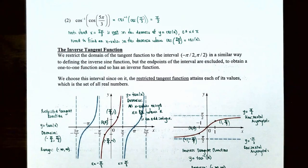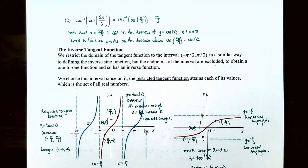This finishes our video on inverse sine and inverse cosine functions and their graphs. We talked about using the inverse sine and inverse cosine functions, finding exact values of expressions involving them, and their graphs. If you have any questions about examples in this video or about homework for this section, please let me know. I'll see you in the next video when we talk about the other four inverse trigonometric functions and their graphs.